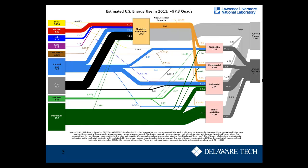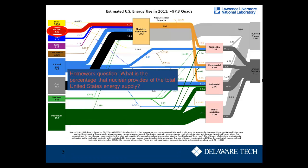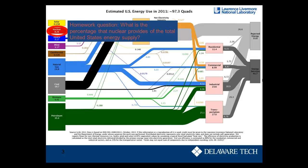First I want to go over nuclear. As usual, we'll start with this chart, and I want you to calculate for homework the amount of nuclear energy that we get in the United States. So what is the percentage that nuclear provides for the total United States energy supply?